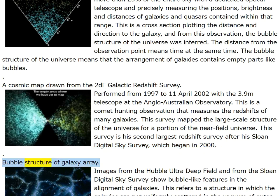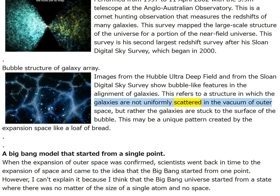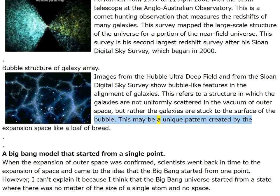Images from the Hubble Ultra Deep Field and the Sloan Digital Sky Survey show bubble-like features in the alignment of galaxies — a structure in which galaxies are not uniformly scattered in the vacuum but are stuck to the surface of bubbles. This may be a unique pattern created by the expansion of space, like a loaf of bread.